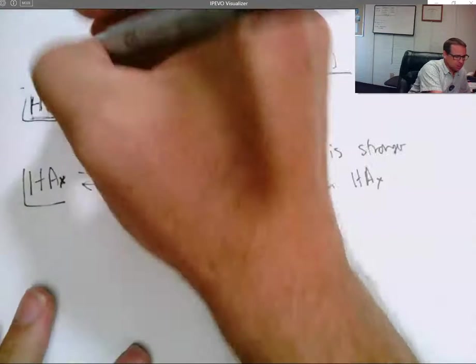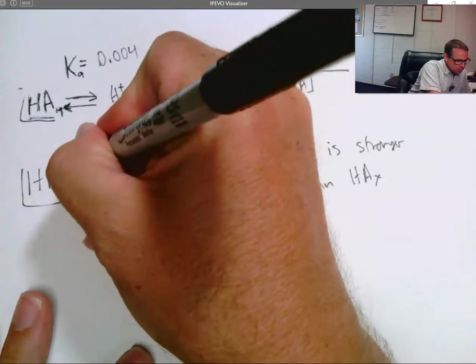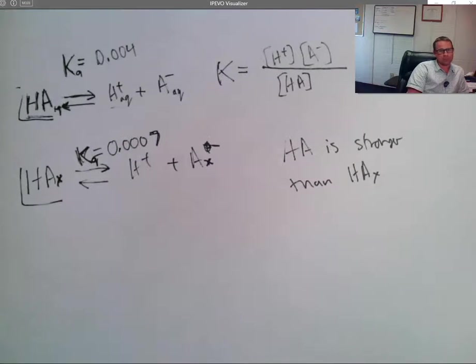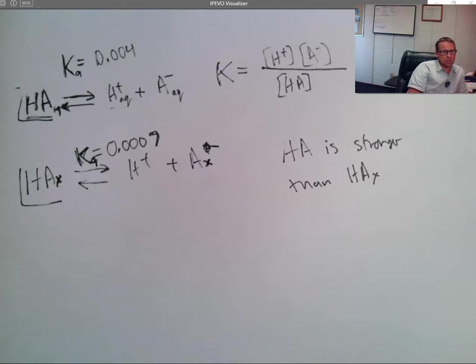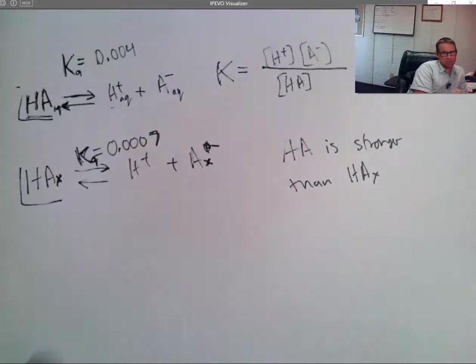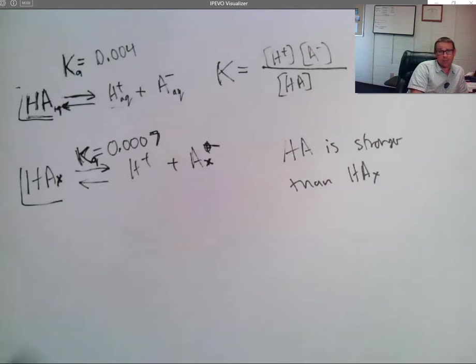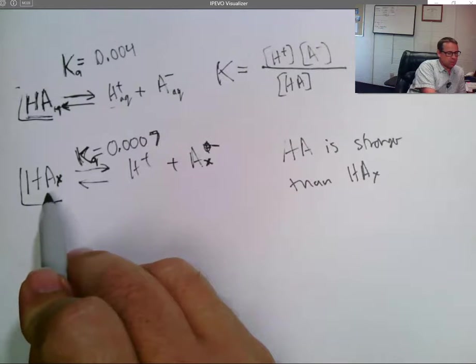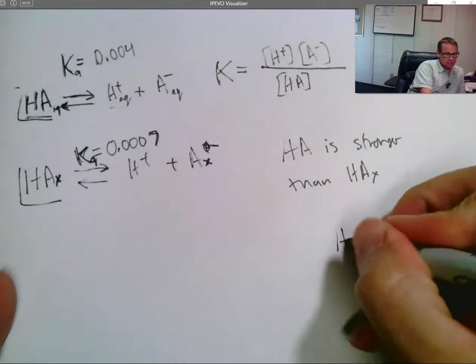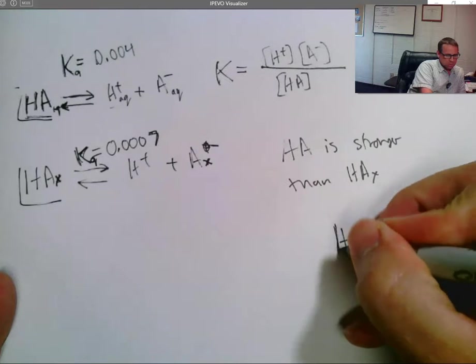Very good. Now, sometimes when we're talking about the K of an acid, we call it the Ka. The Ka. And we also introduced something called the Kb. The Kb for an acid is not really for an acid, but it's for the conjugate base of that acid.